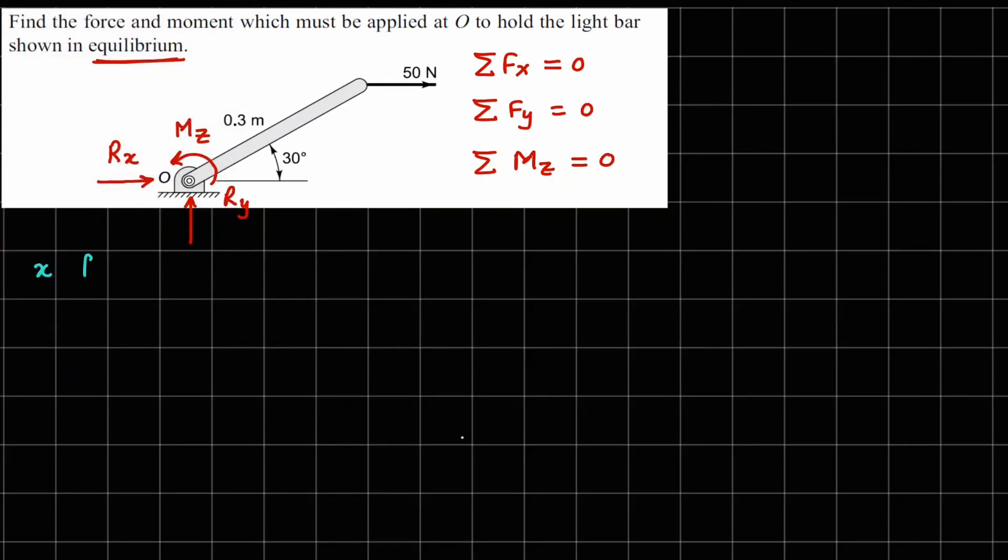So if you apply these equations in x, y, and z direction, if I do x force balance, the forces in x are this Rx right here and 50 newtons, so I can write Rx plus 50 newtons equals to 0. Now when I do y force balance, the only force in the y direction is this Ry.